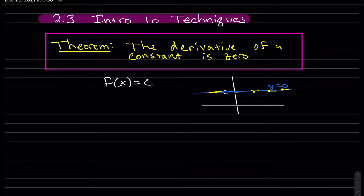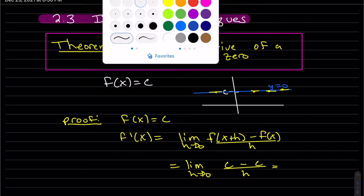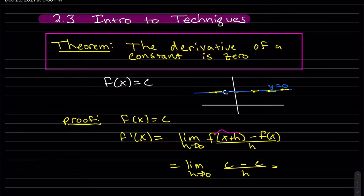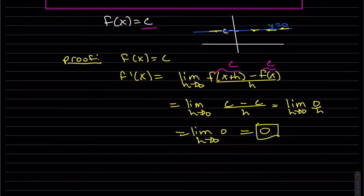Here's our other proof using the definition. So no matter what you input, no matter what you plug in, the output is always c. The output is c, so we get c minus c, which is 0. The limit of 0 is 0. So f prime of x is equal to 0 when f of x is equal to c.